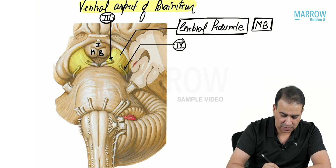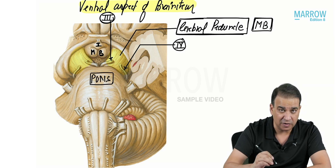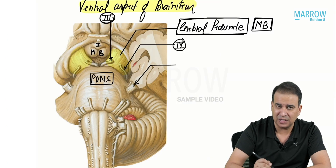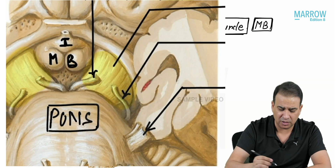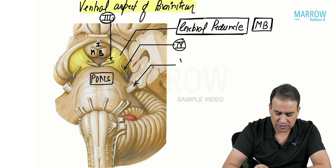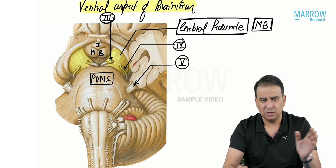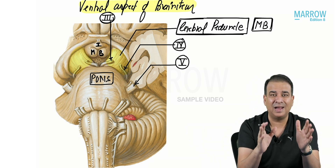Looking at the pons: in the ventral aspect of the pons, there are many nuclei present inside, but the only nerve emerging from the pons is the fifth nerve — the trigeminal nerve, a mixed nerve. You can see two components: don't get confused, the thicker part is sensory and the thinner part is motor. The only nerve emerging from the ventral surface of the pons toward the lateral side is the fifth nerve.